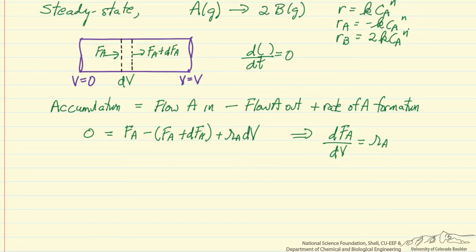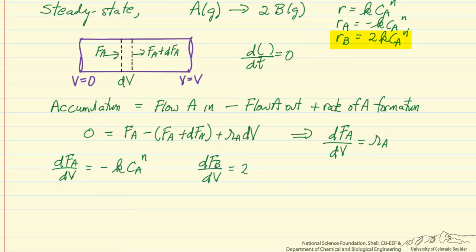We can now substitute the rate law into the mole balance for the plug flow reactor: for A, dF_A/dV equals minus k·C_A^n. We also write the balance for B: dF_B/dV equals plus two times k·C_A^n, where the stoichiometric coefficient is two. The molar flow rate of B is increasing as we move down the reactor, so this is positive, while the molar flow rate of A is decreasing, consistent with the stoichiometric coefficients.